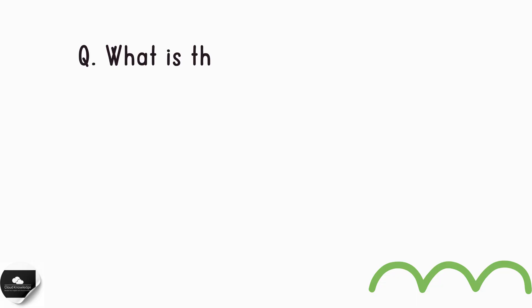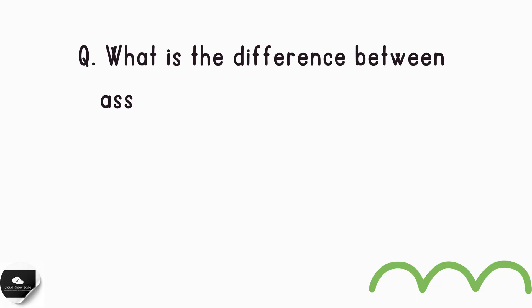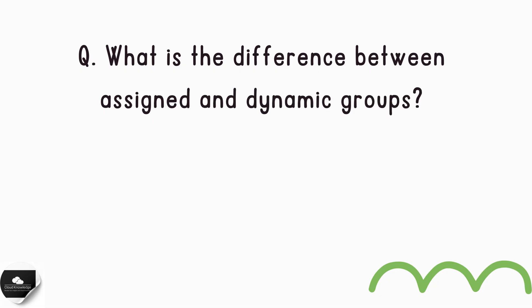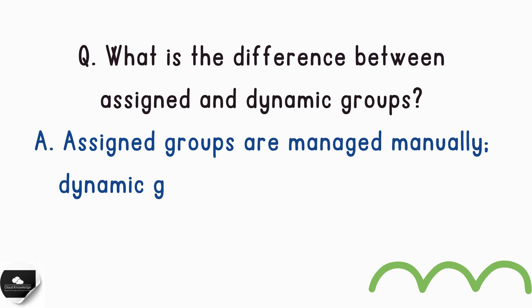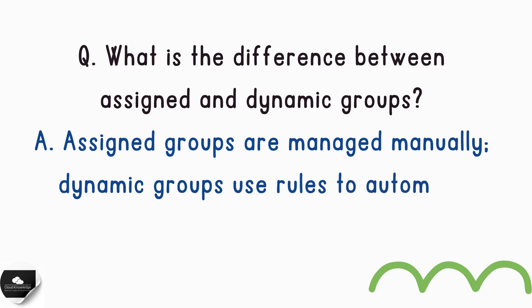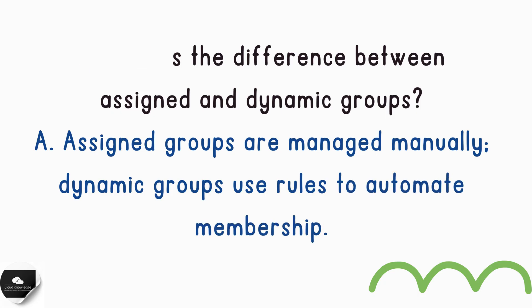Next: what is the difference between assigned and dynamic groups? With an assigned group, membership is added manually. With a dynamic group, membership is controlled by rules. This reduces admin overhead and helps scale access policies smartly.